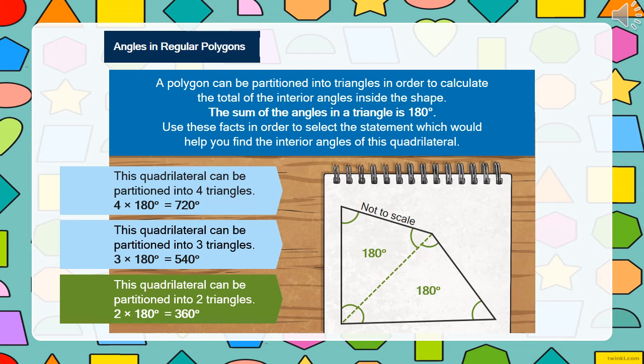Is it this quadrilateral can be partitioned into four triangles? This quadrilateral can be partitioned into three triangles? Or is it this quadrilateral can be partitioned into two triangles? That's right, it can be partitioned into two triangles. We now know that we can multiply 180 by 2, which equals 360. So we now know the interior angles for this quadrilateral is 360 degrees.